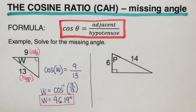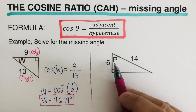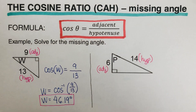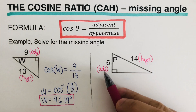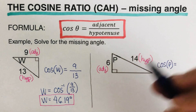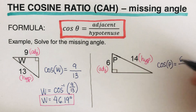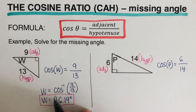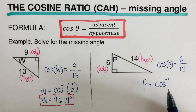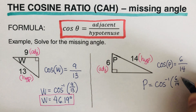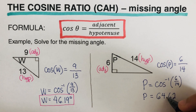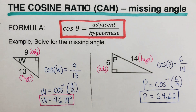Now let's go over the second problem. We label the parts first — we're looking for angle P. The 6 is our adjacent and 11 is our hypotenuse. We use the same equation: cosine of angle P is equal to adjacent 6 over hypotenuse 14. So angle P is equal to the inverse cosine of 6 over 14. Using the calculator, we should get angle P as 64.62 degrees.